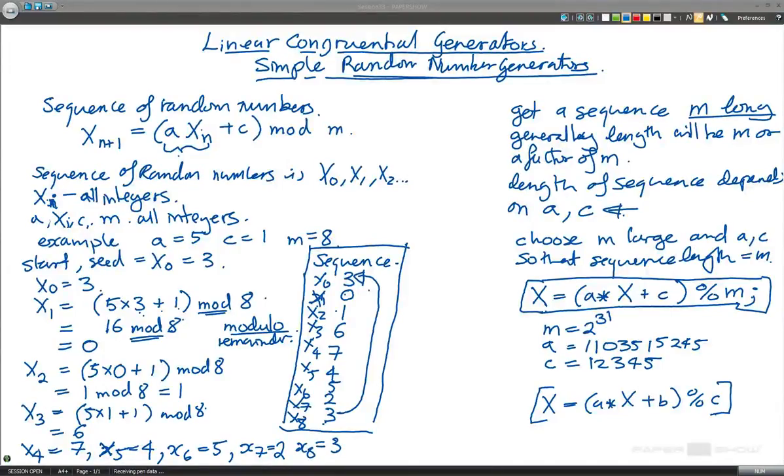One final comment about the random number generators: to get random numbers between 0 and 1, take your number from the sequence, say xi, and divide it by m.